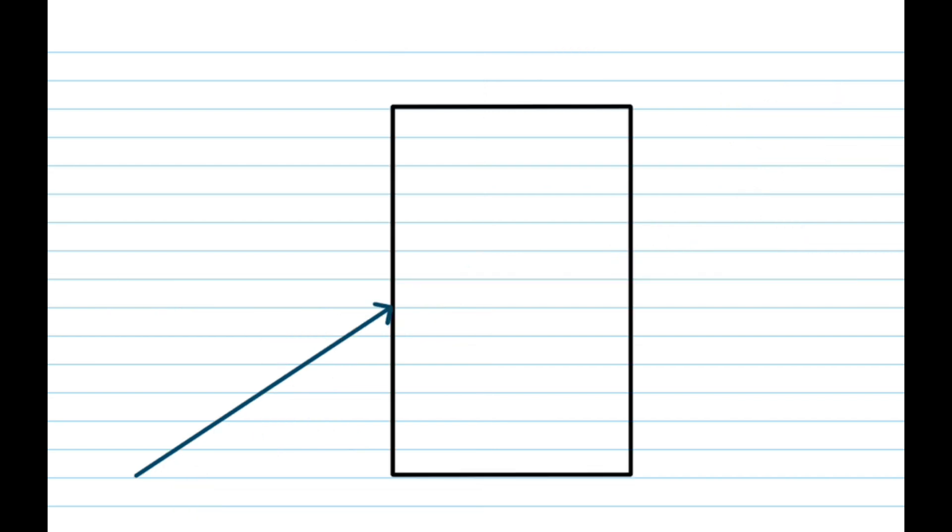So let's have a look at an example. Here we have a block. And they tell us that there's air where the light ray is coming in and the block is made of glass. So what is our first step? That is right. We draw the normal. That's always our first step.